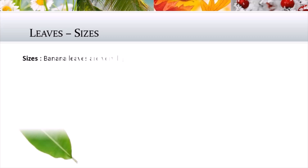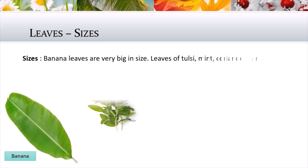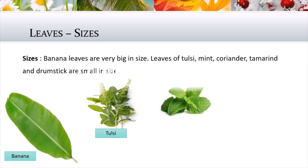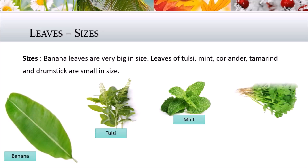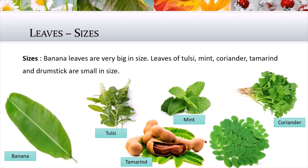Now let us look at the differences. Leaves are of different sizes. Banana leaves are very big in size, but the leaves of tulsi, coriander, mint, tamarind, and drumstick are smaller in size.